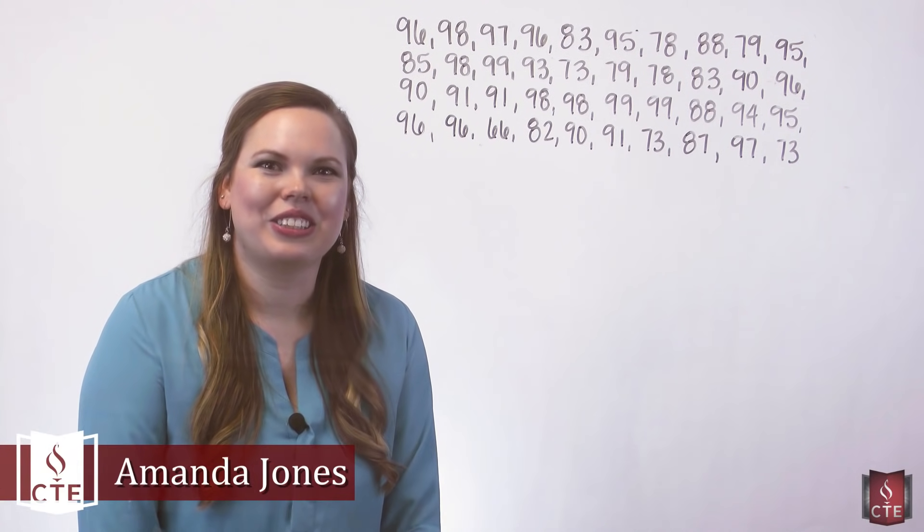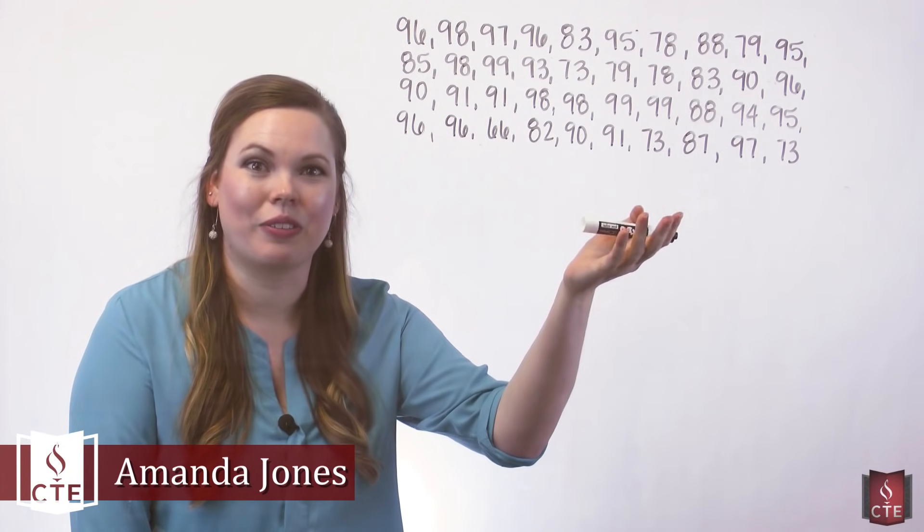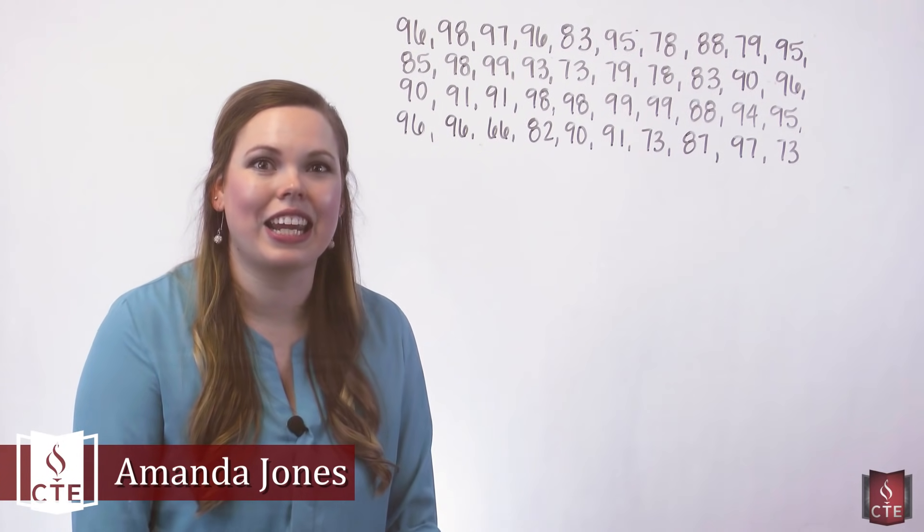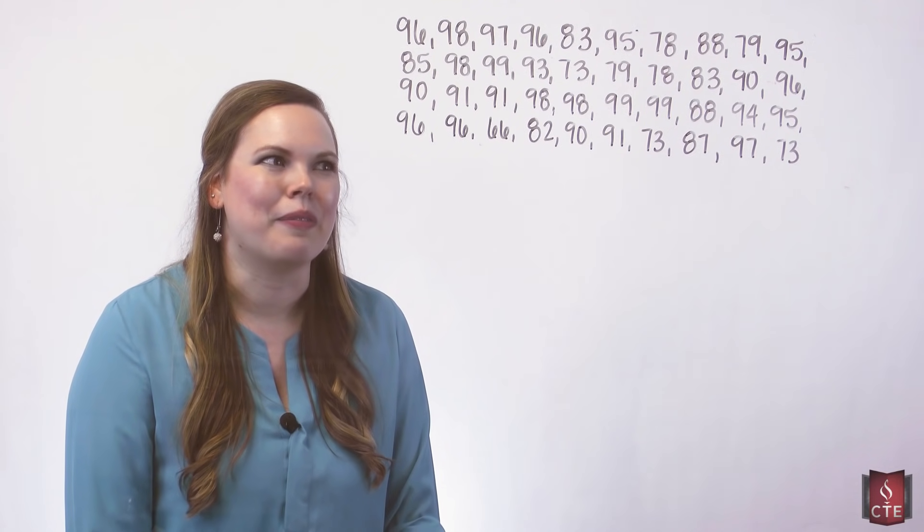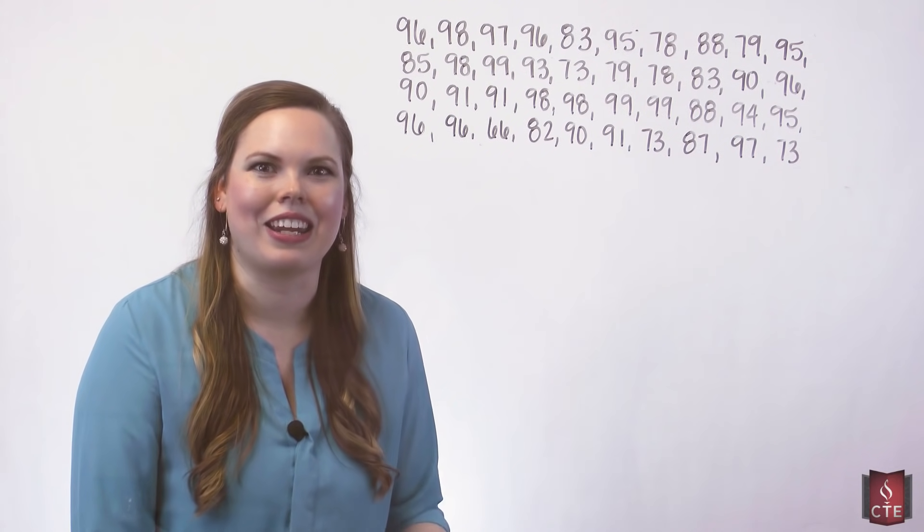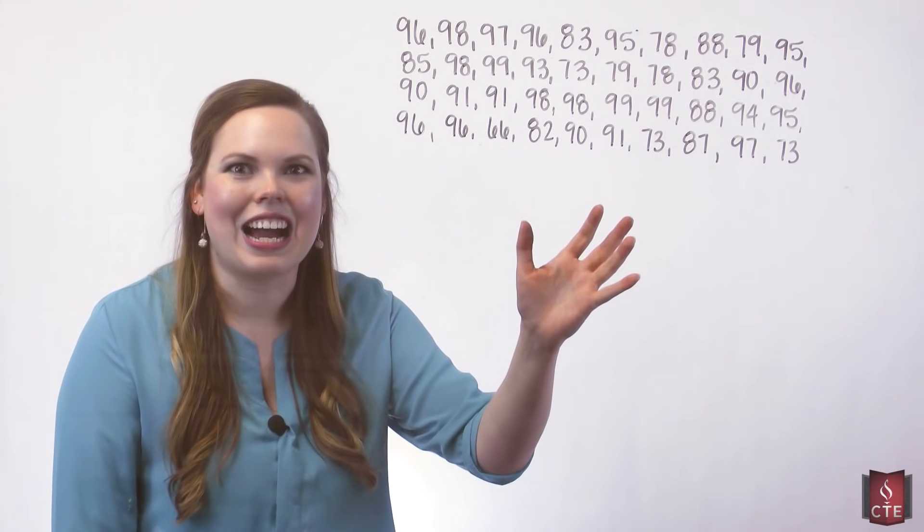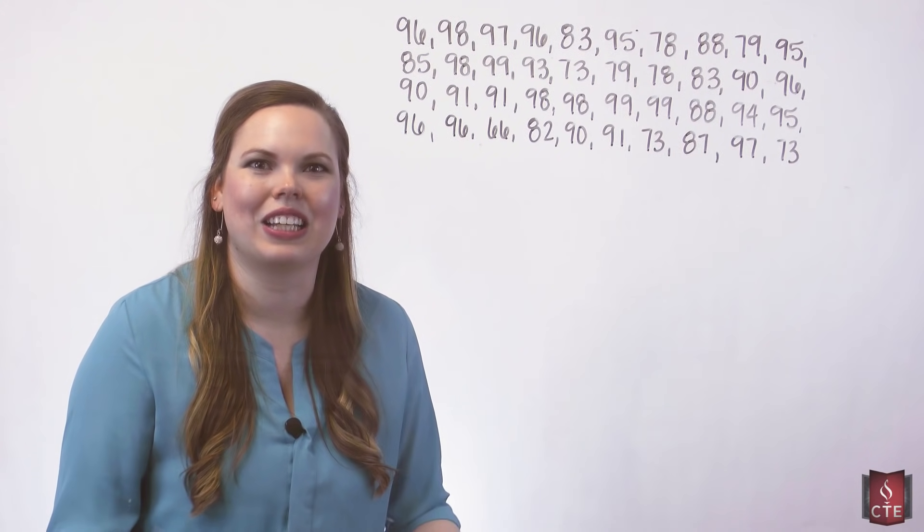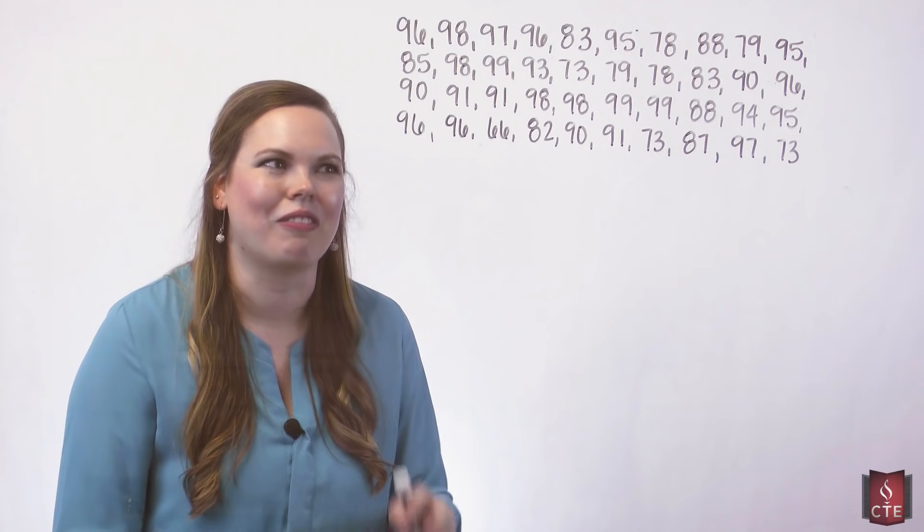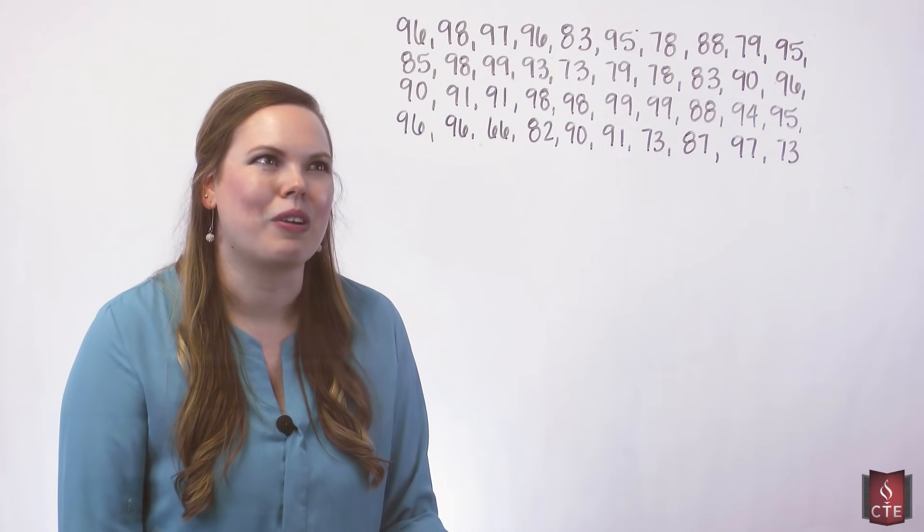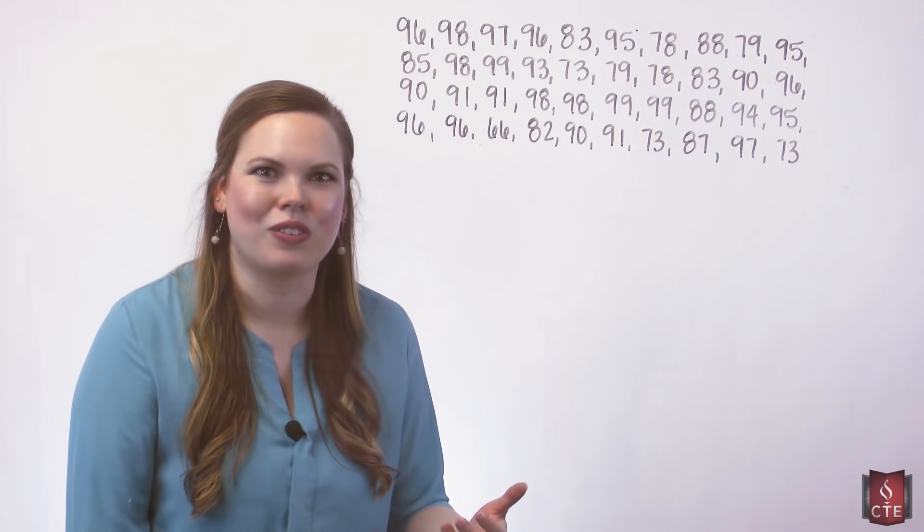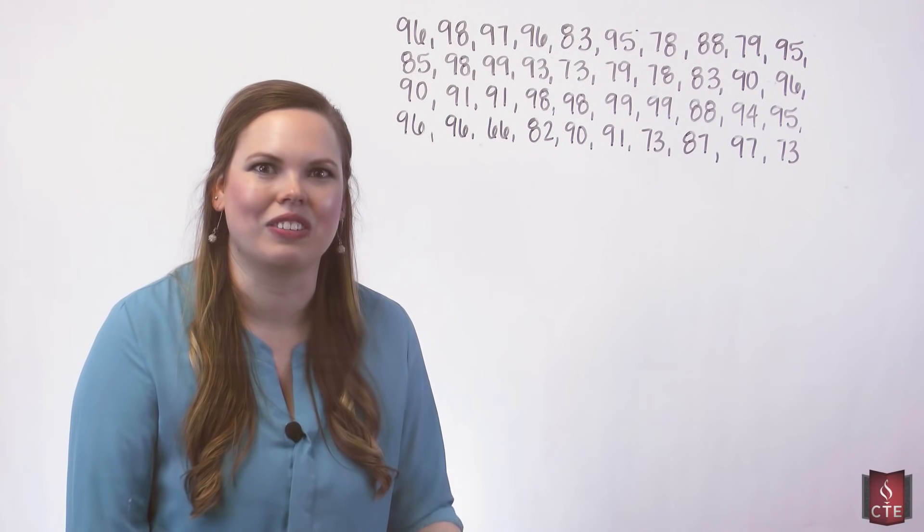Hi, we are going to construct a frequency distribution with this raw data. This data, just so that we can use it as we move along, is a collection of 40 pennies. In 1999, a class of students collected 40 pennies and then they wrote down the year of each of these pennies. We are going to organize these 40 data values into a frequency distribution.